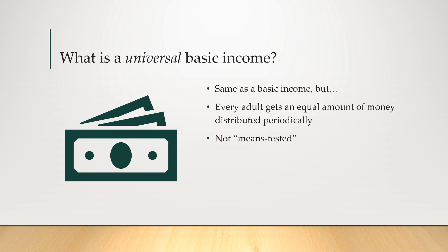A universal basic income, or UBI, is the same concept as basic income, but every adult gets an equal amount of money distributed periodically regardless of their income level — it is not means-tested. Whether you're the richest or least well-off person in society, you get the same amount. Advocates of UBI say it is more durable and easier to administer because you don't have to assess how much people have, and it provides stability and reliability for everyone in society.